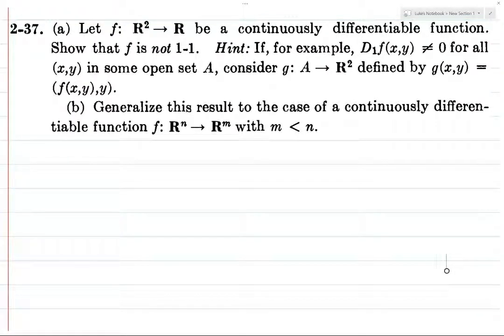Alright, so we want to look at functions from a higher dimensional space to a lower dimensional space which are continuously differentiable and prove that they're not one-to-one. For part A, we're just going to look at the case where we have a function from R² to R.